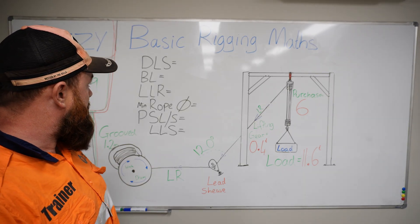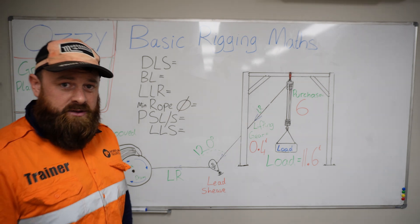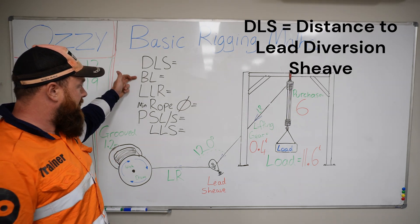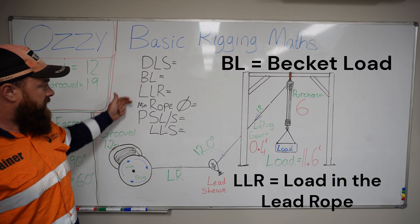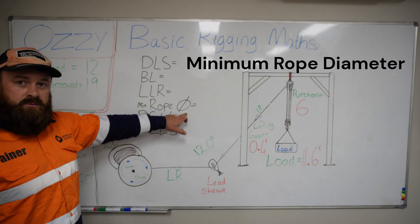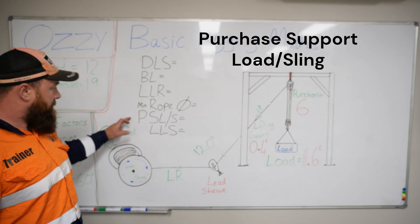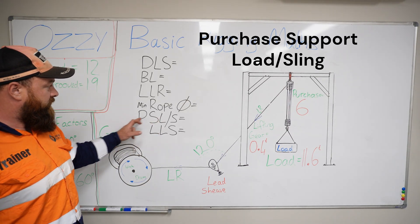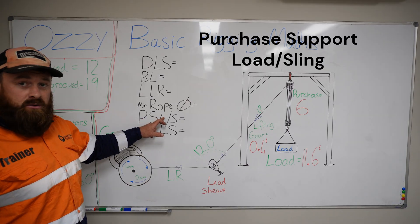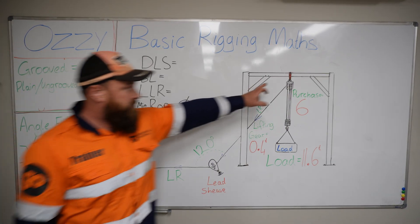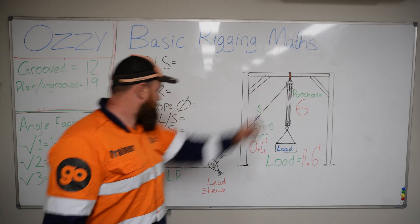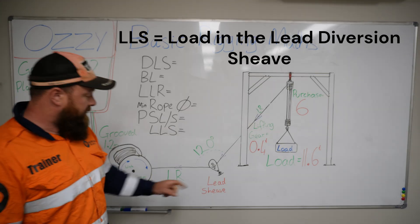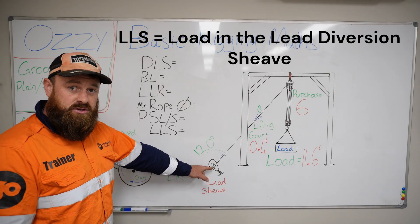What we're going to start with is a little bit of basic terminology. We've got these abbreviations here: DLS, BL, LLR, MIN, Rope and that symbol is for diameter, PSLS which stands for the Purchase Support Load or Sling, and LLS — the Load in the Lead Diversion Sheave.